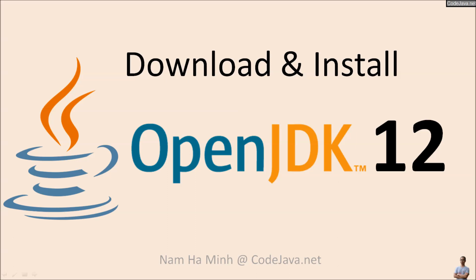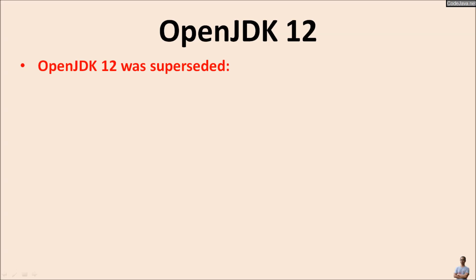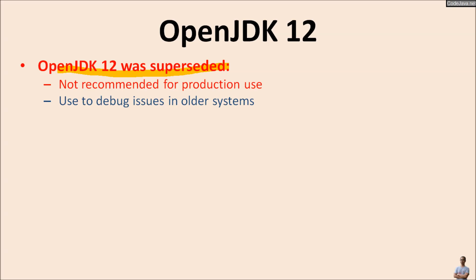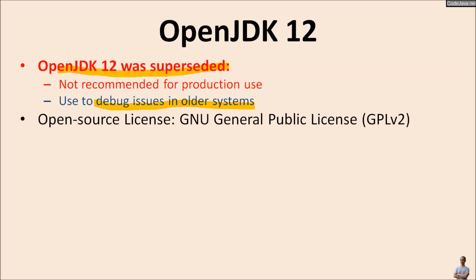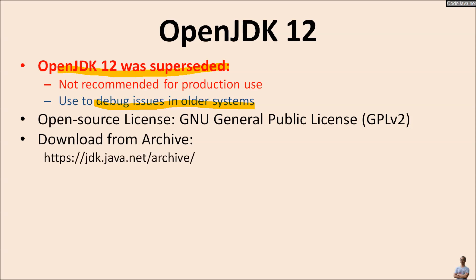Hello, in this video I will guide you how to download and install OpenJDK version 12 from jdk.java.net. Note that OpenJDK 12 was superseded, meaning it is not recommended for production use and should be used only to debug issues in other systems. OpenJDK is an open source Java Development Kit licensed under the New General Public License version 2, and you can download OpenJDK version 12 from the archive download page at jdk.java.net.